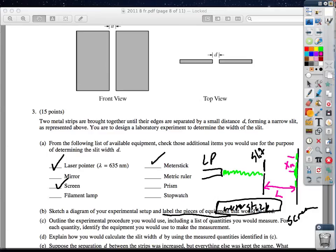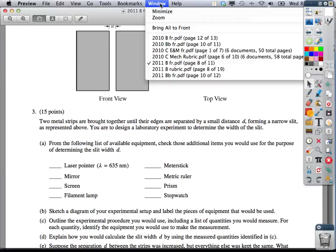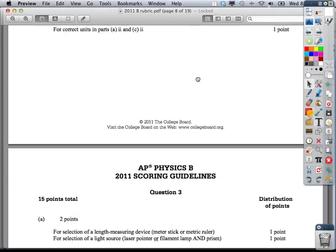So yeah, I'd say set that up, measure this distance, and then shine the light, and then measure that distance. Explain how you would calculate the slit width D by using the measured quantities.